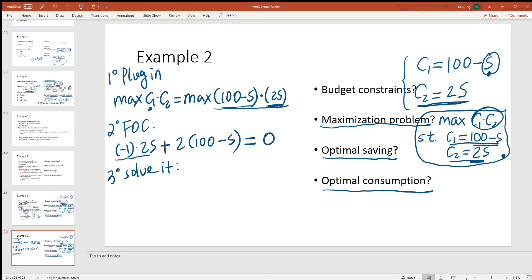So negative one times 2s, that's negative 2s. Two distributed inside, so we have 200, two times negative s, minus 2s, equal to zero. Negative 2s, negative 2s, that's negative 4s. So negative 4s plus 200 equal to zero. Move the negative 4s to the right hand side, becomes positive 4s. So 200 equal to 4s. Finally, divide both sides by four, so s is equal to 50.